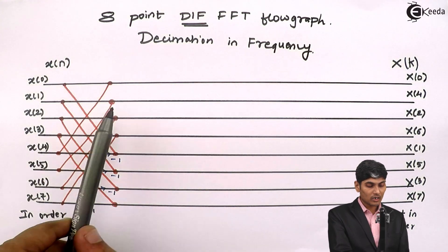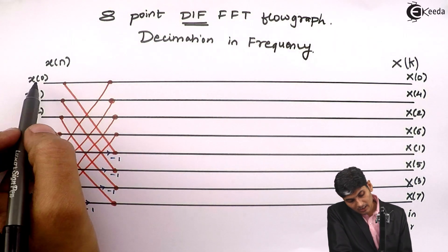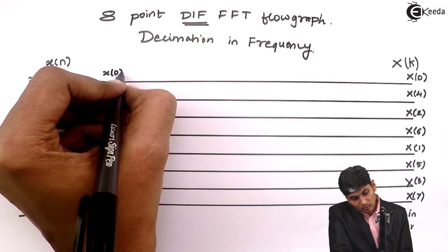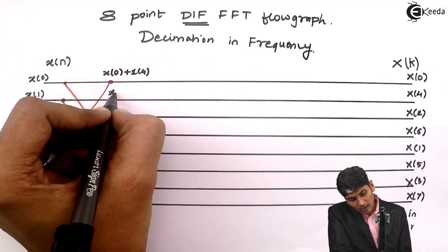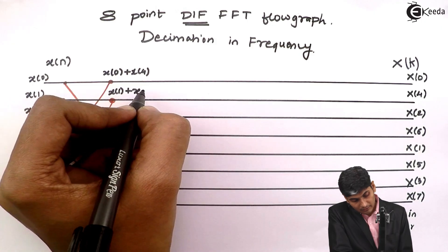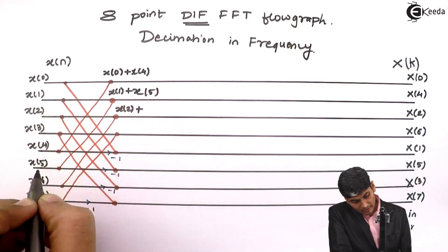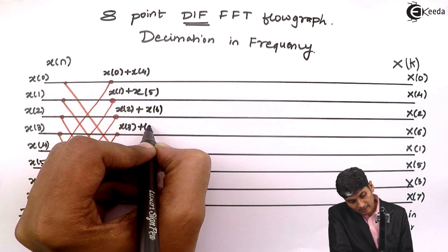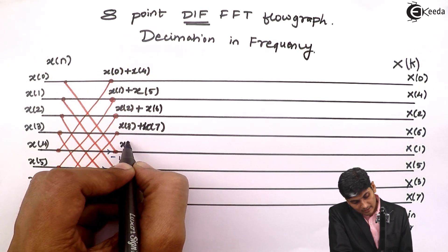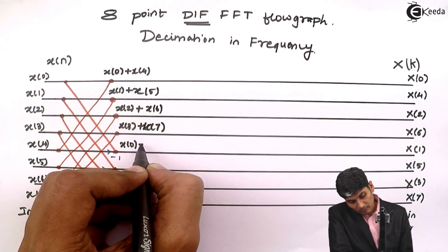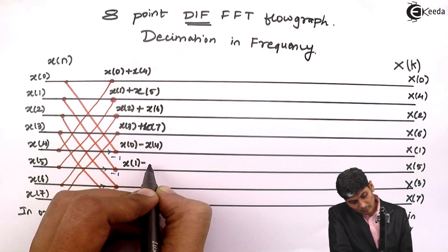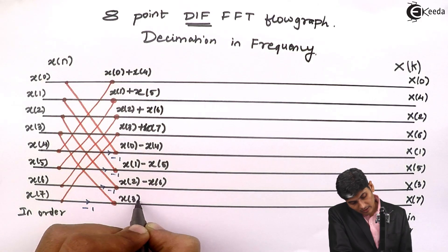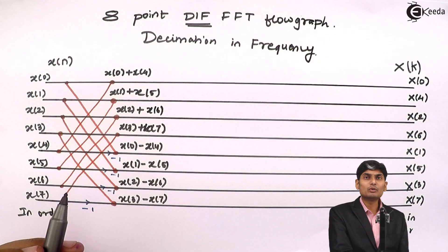Let us analyze the output sequence at this stage. Whenever two lines meet, we add. So X(0) meets X(4) giving X0 + X4; next is X1 + X5; next is X2 + X6; next is X3 + X7. For the lower four lines with minus 1: X0 − X4, then X1 − X5, then X2 − X6, and X3 − X7. These are the outputs of the first stage.